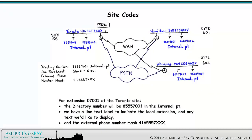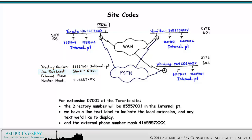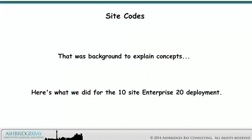For extension 57001 at the Toronto site, the directory number will be 8555-7001 in the internal partition. We have a line text label to indicate the local extension and any text we'd like to display, and the external phone number mask is 416-555-7-XXX. That was background to explain concepts. Here's what we did for the 10-site Enterprise 20 deployment.